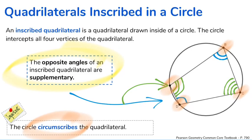The verbiage for this situation: you would say that the circle is circumscribing the quadrilateral. When talking about it being circumscribed, the four endpoints on the quadrilateral — highlighted in orange — all sit on the circumference of the circle.